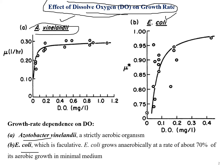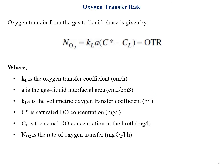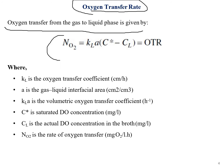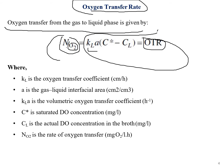Moving on with today's video, the next part we need to talk about is the oxygen transfer rate. Oxygen moves from the gaseous phase into the liquid phase. The oxygen transfer from gas to liquid is given by: OTR = kLa(C* − CL), where OTR is the oxygen transfer rate, kLa is the volumetric oxygen transfer coefficient, C* is the saturated dissolved oxygen concentration, and CL is the actual dissolved oxygen concentration in the broth.